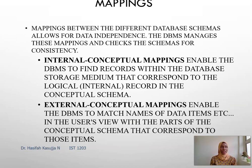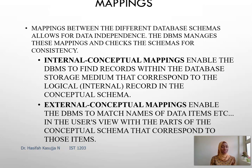Those are the three levels of ANSI and how they ensure mapping and data independence. Mapping between the different database schemas allows for data independence, and also helps in checking the schemas and checking for consistency. We have two types of mappings: the internal-conceptual mapping and the external-conceptual mapping.